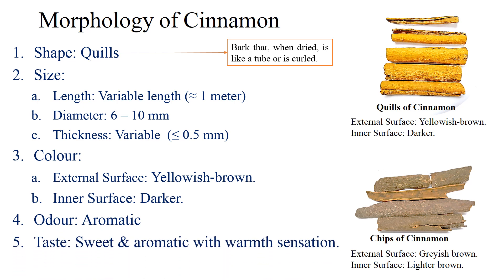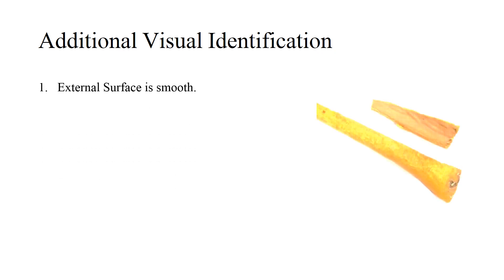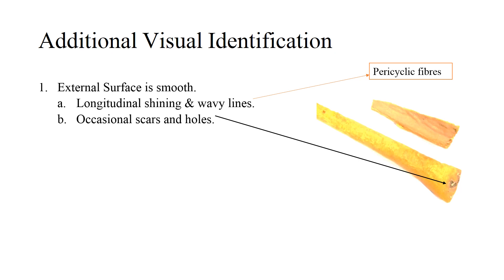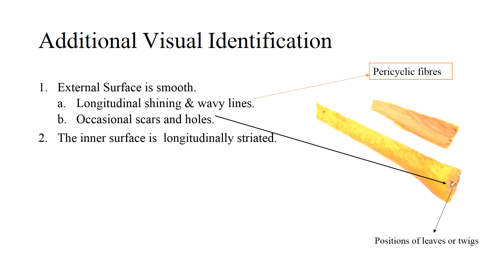Odor is aromatic. Cinnamon tastes sweet and aromatic with warm sensation. Additional visual identification: the external surface is smooth and shows longitudinal shining and wavy lines of pericyclic fibers. Occasionally the surface shows a scar and hole indicating the position of leaves or twig. The internal surface is darker and is longitudinally striated. The bark breaks with short and splintery fracture.